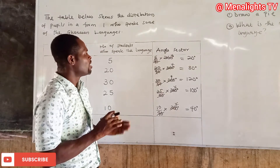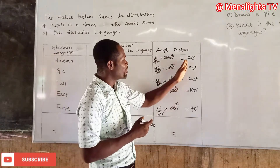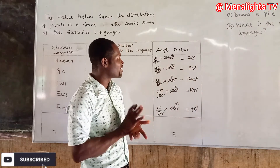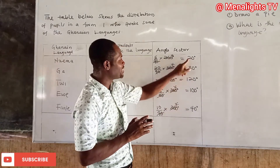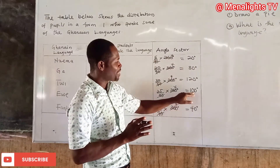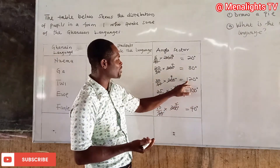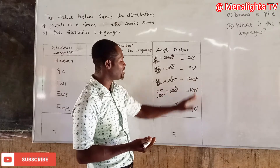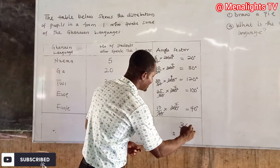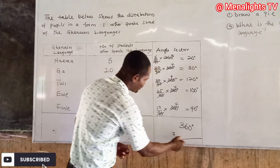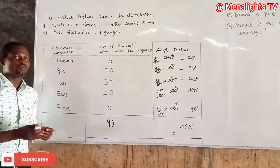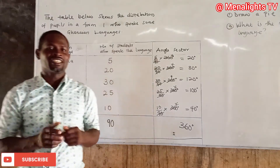After calculating all the angle sectors, we need to add them all to verify we get 360 degrees. So: 20 + 80 = 100, plus 100 = 200, plus 120 = 320, plus 40 = 360 degrees. Confirmed. Now we move on to constructing the pie chart.